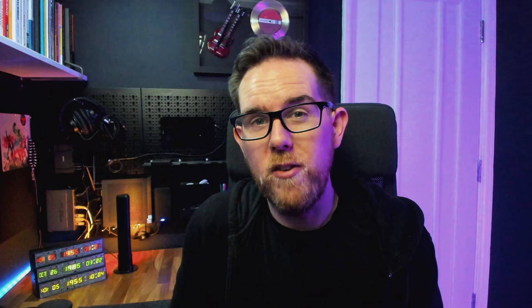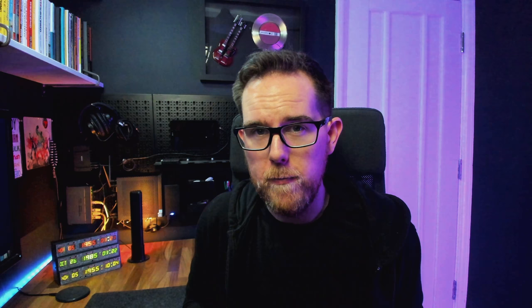In the relational database model, each of these resources is going to be represented by a table in your database. And then of course you're going to want to create, read, update, and delete each of the records in your tables. To do this, we create an endpoint for each operation for every single resource that we have, so we end up with quite a lot of endpoints to be able to interact with our domain model.